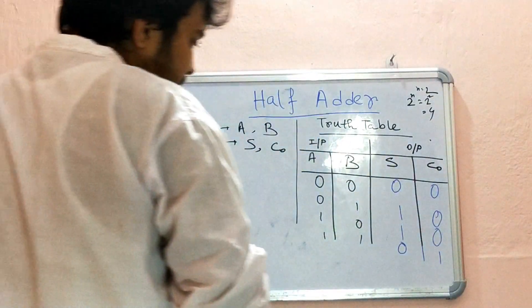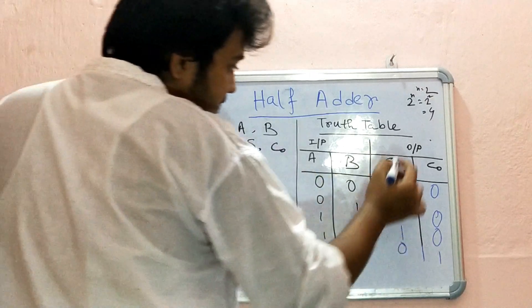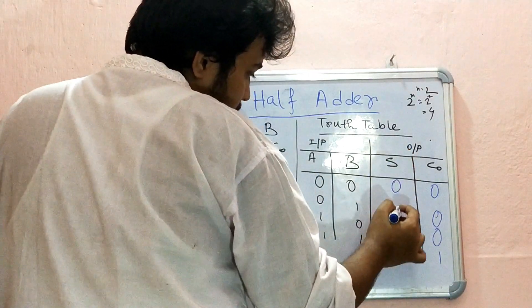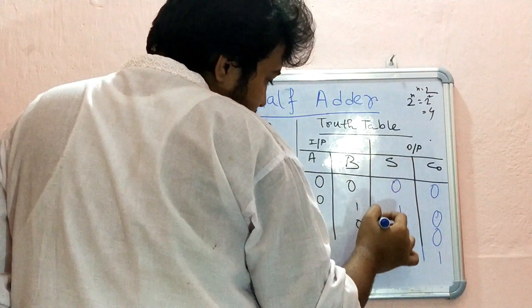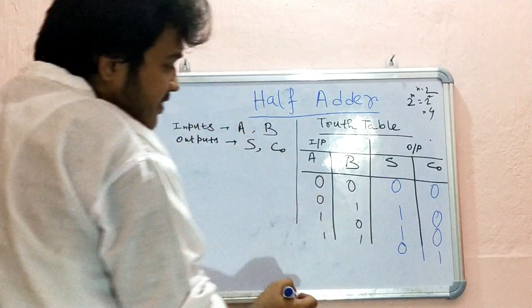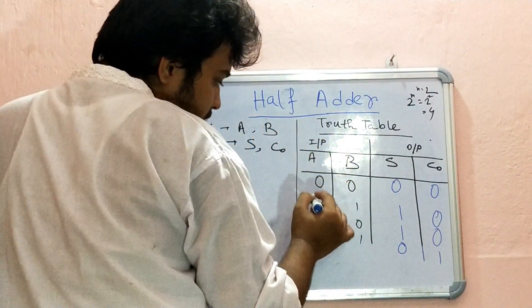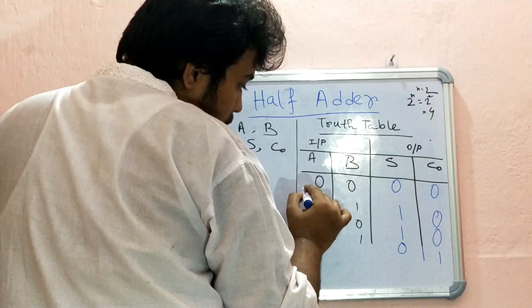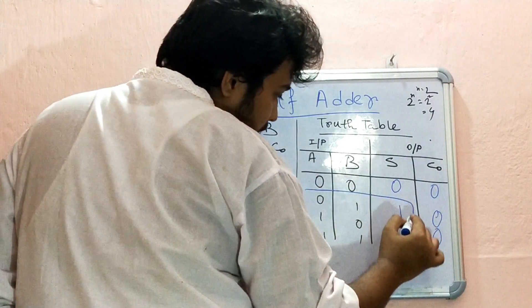We can say this sum is the odd ones detector, because when the inputs have odd number of ones...